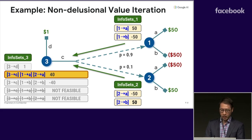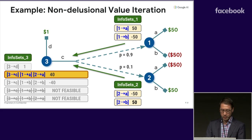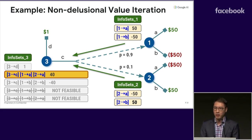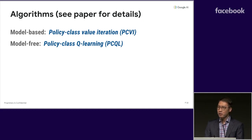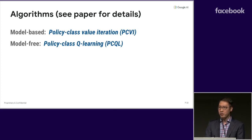We'll notice that at each state, the information sets form a complete partition of the value function parameter space, or equivalently the policy space. You might be concerned about the proliferation of information sets, but it turns out that this pruning is exactly what's needed to keep things tractable. It's easy to turn this intuition into an algorithm in the model-based setting, which we call policy class value iteration, and in the model-free setting we do sample-based backups instead to get policy class Q-learning.